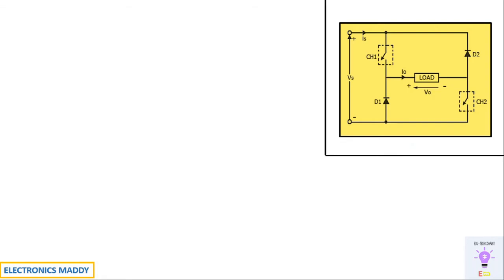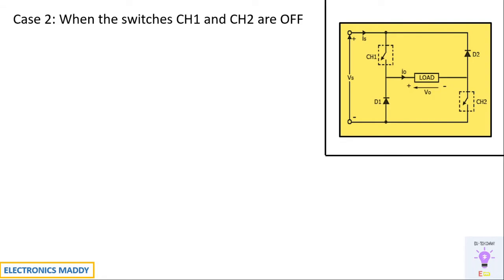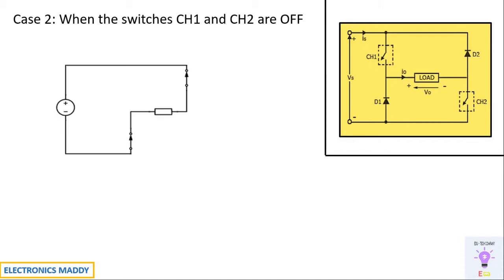In case two, when switches CH1 and CH2 are turned off, D1 and D2 will start conducting. According to the property of the inductor, it does not allow a sudden change in current. Current was previously flowing in a particular direction in the previous equivalent circuit.